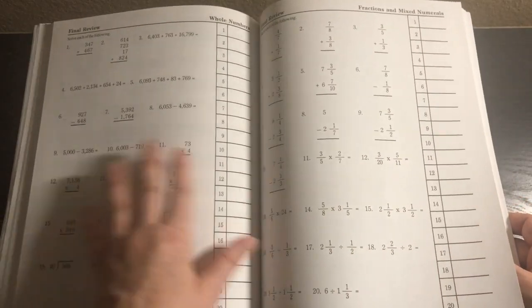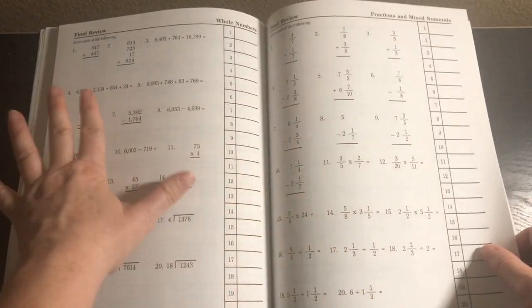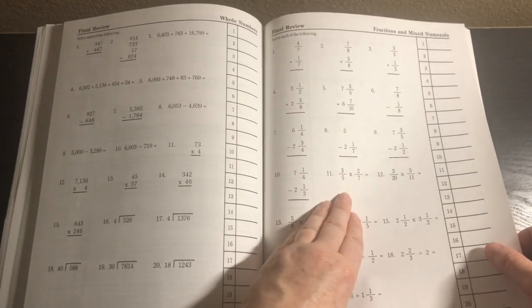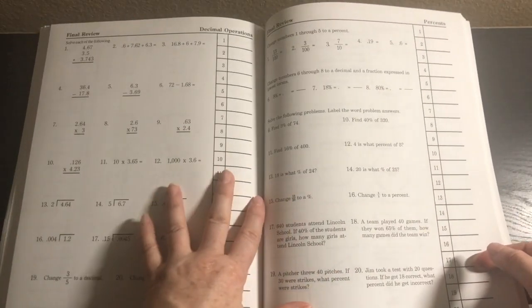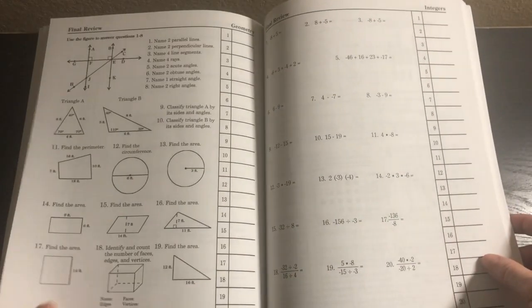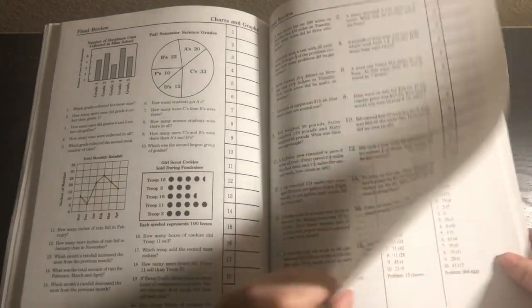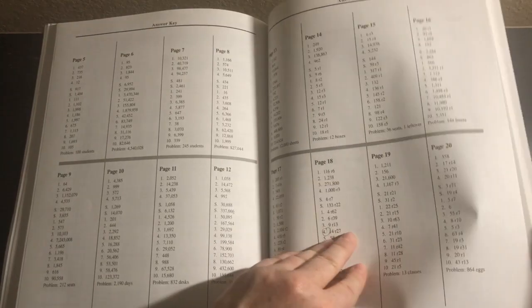Then we have a final review. We've got final review for whole numbers, fractions and mixed numbers, decimal operations, geometry, integers, charts and graphs, and problem solving. Then we have our answer key.